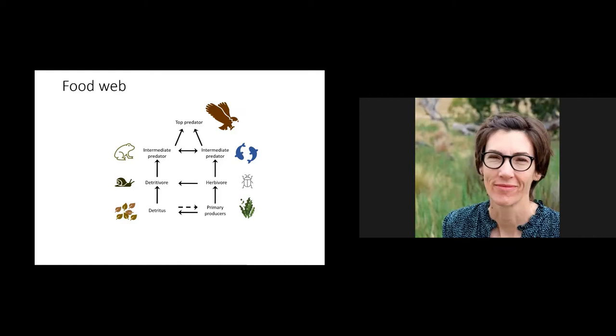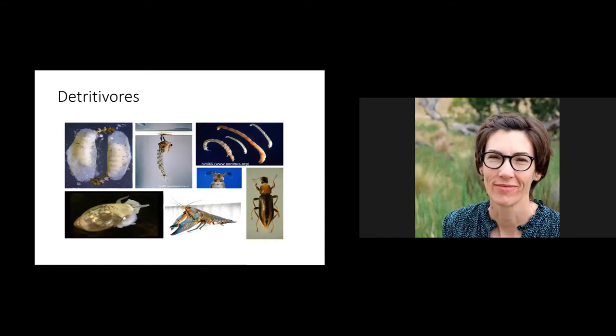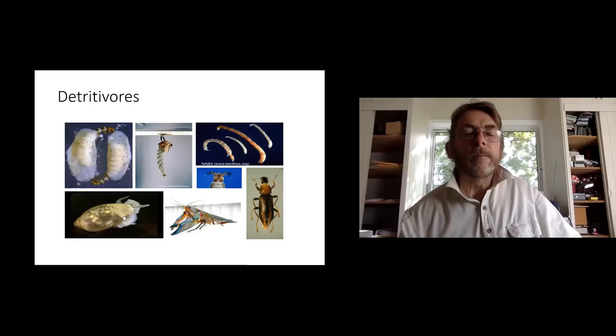I study all of the different animals that live in wetlands, and I thought I'd share some of my favorites from the food webs I've seen in wetlands in this area. First, I'd like to introduce you to a few of my favorite detritivores — the animals that eat dead and decaying vegetation and other organisms.